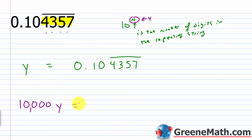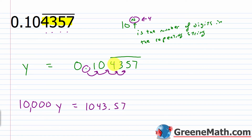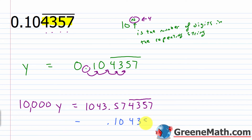So 10,000y equals — moving the decimal 4 places to the right — 1043.57, and then the repeating pattern 4357 starts again, so I put a bar over the 4, 3, 5, and 7. Now I subtract this value from each side of the equation. On the right I subtract 0.104357 with the bar over 4, 3, 5, 7, and that repeating part cancels.